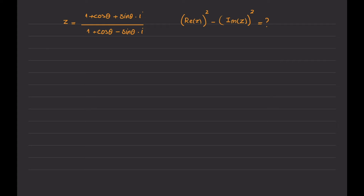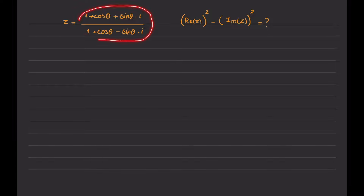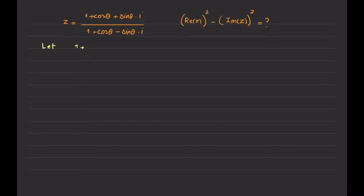So now let us solve the problem together. In order to answer this question, I need to know the real part and imaginary part of my complex number. My complex number is not yet in standard form, so I have to transform it into standard form. Because I don't want to make the calculations complicated, I want to introduce some variables. Let's call 1 plus cosine theta as A, and sine theta as B.